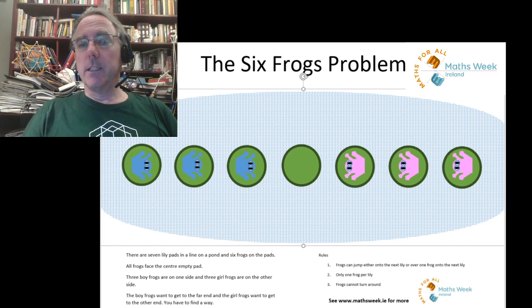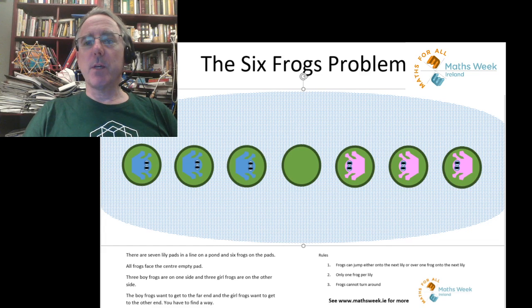So the rule is that the frogs can only move forward, they can only move onto an empty space, and they can either jump onto an empty lily pad in front of them or jump over a frog onto an empty lily pad - just over one frog. You can weave any story around this to make it more fun.